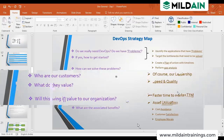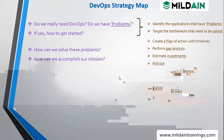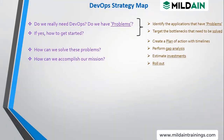If you see our DevOps strategy map, the question comes: do we really need DevOps? Do we have problems? If yes, how to get them out? How do we come to know about the problems and bottlenecks? We do an assessment. When we do the assessment, we identify the applications — specifically applications which have frequent releases. We look at the application architecture, how it's working, what processes are involved, and from there we find the bottleneck.